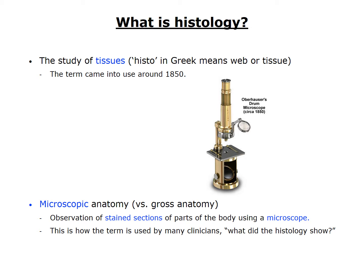A family practice doctor, for instance, may remove a skin growth from a patient's arm and send it for analysis by a pathologist. She might call later and ask, what did the histology show? The pathologist will have prepared and stained sections from the sample and examined them with a microscope.